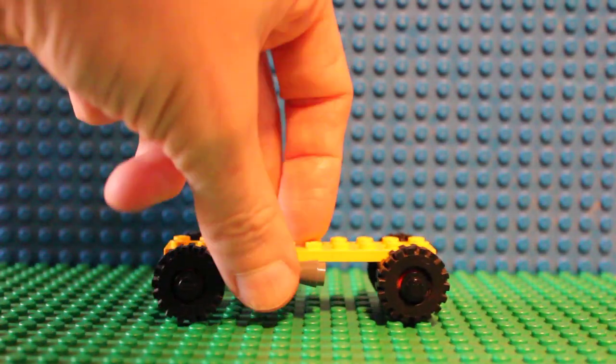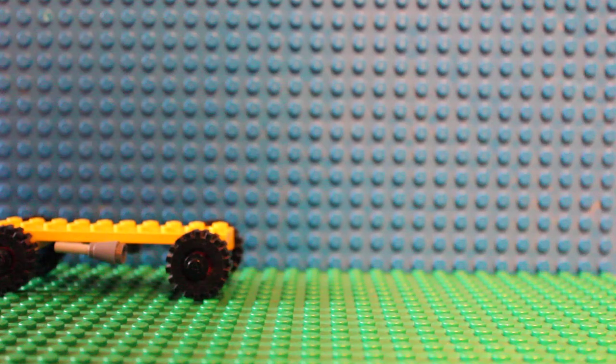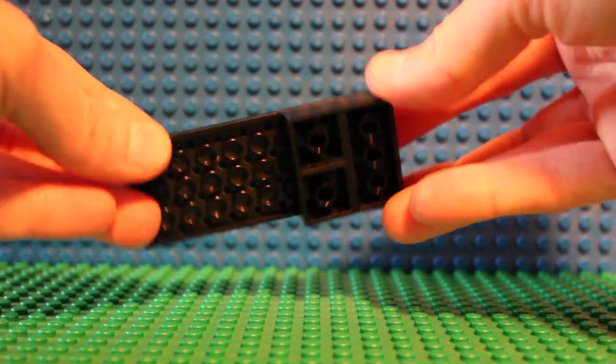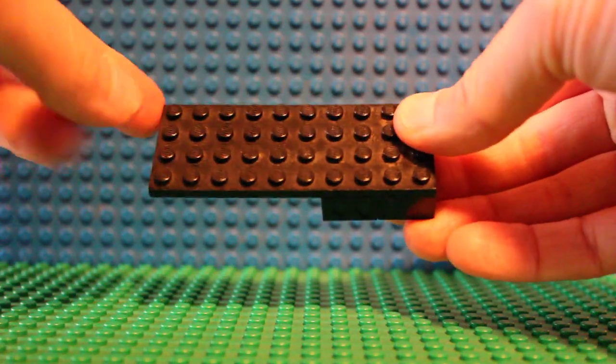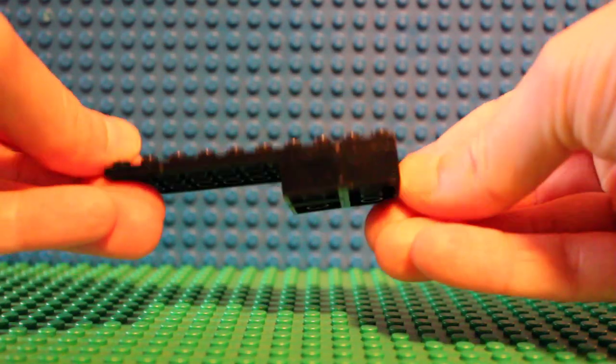So that's the basic chassis. I'm going to set that aside for now. Okay, the upper part of the bed is very simple. It is also a ten stud long piece, four studs wide. It's just one big plate.